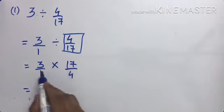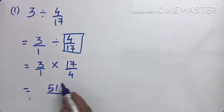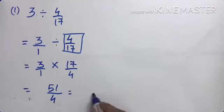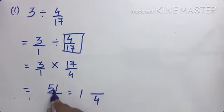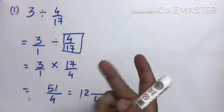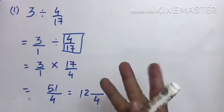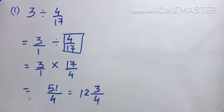So 17 × 3 = 51 और 4 × 1 = 4। Improper fraction आया — 51 by 4। Improper fraction का mix fraction करना: 4 × 12 = 48, remainder 3। So answer है 12 and 3 by 4। Understood.